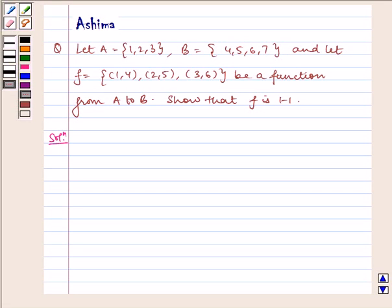Hello and welcome to the session. I discuss the following problem today. Let A equal set 1, 2, 3 and B equal set 4, 5, 6, 7. And let F equal the set (1,4), (2,5), (3,6) be a function from A to B. Show that F is one-to-one. Now let us write the solution.